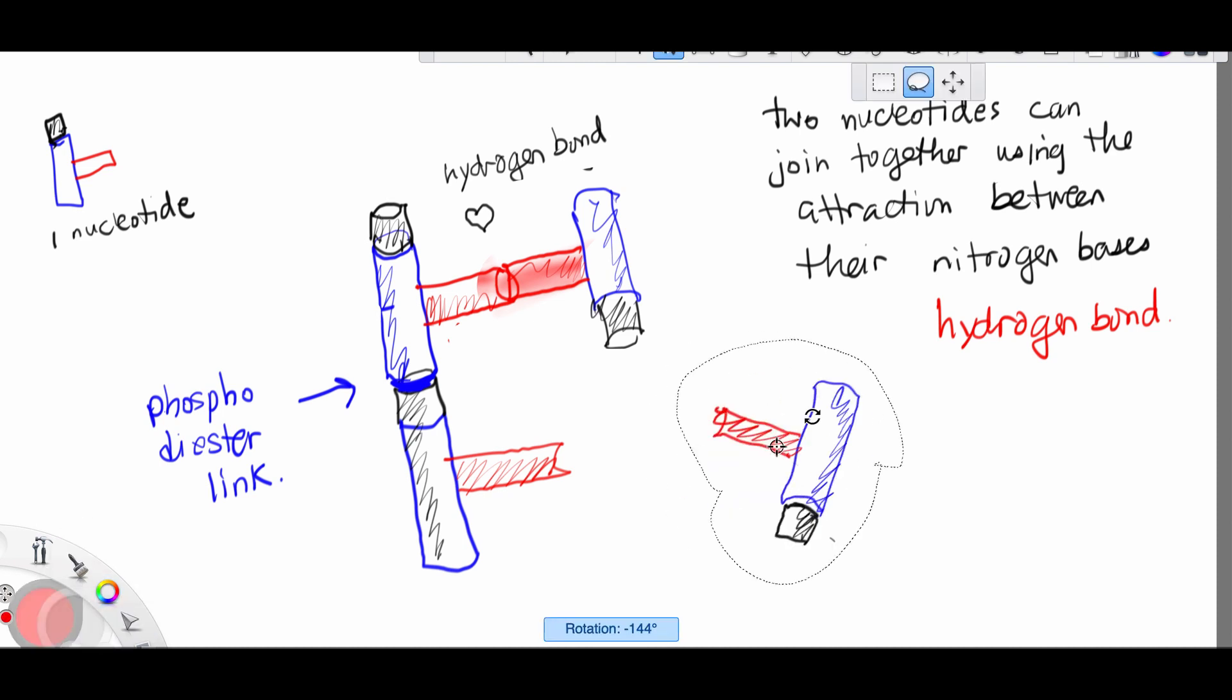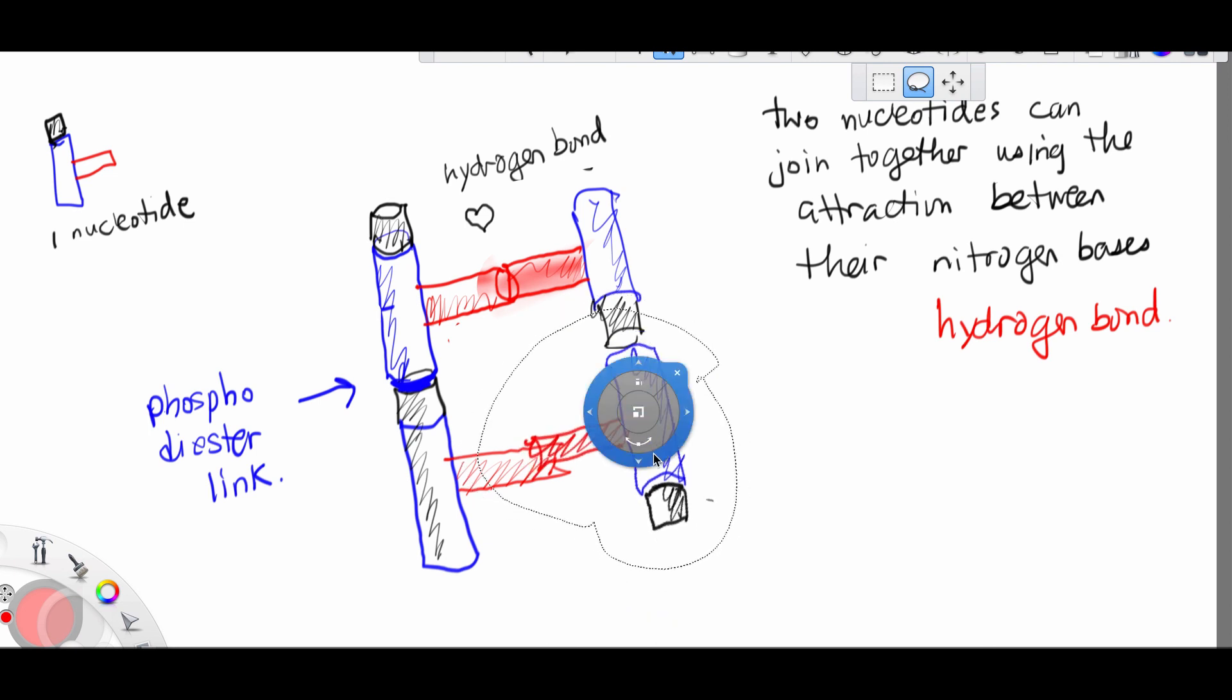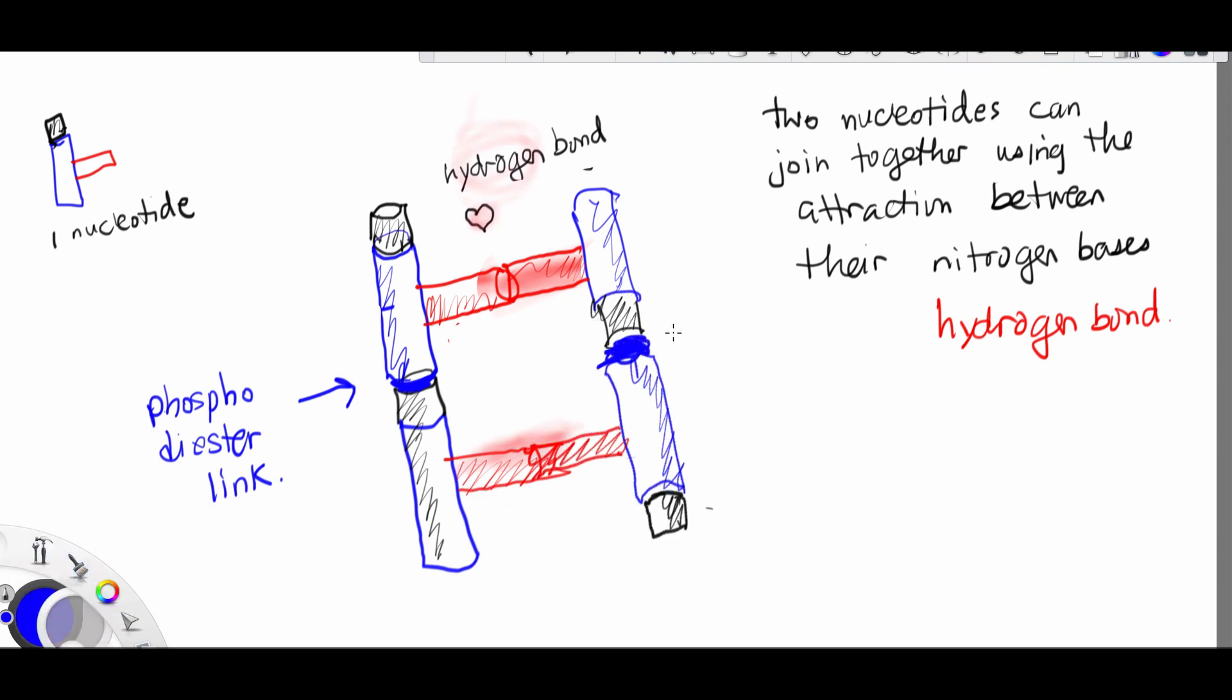So we can see that the DNA ladder structure is bound together using a hydrogen bond as well as a phosphodiester link. Look carefully because this ladder structure is faced in opposite directions on either side. And this characteristic of being in opposite directions means that DNA is anti-parallel.